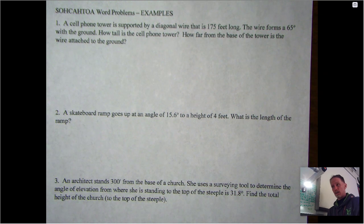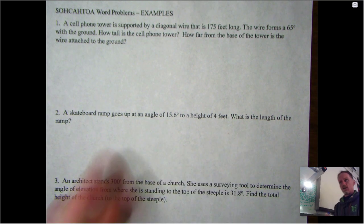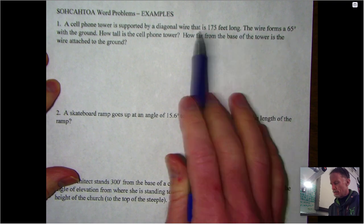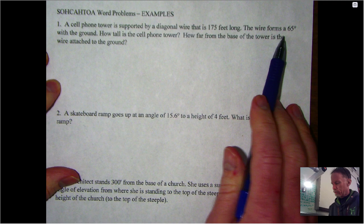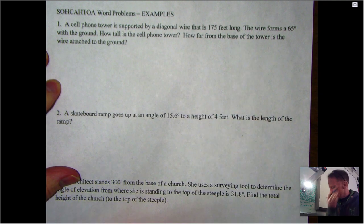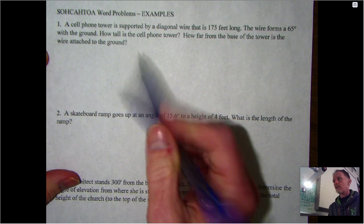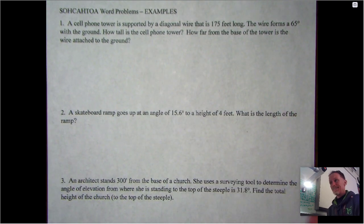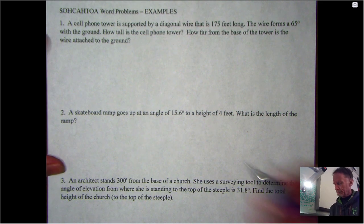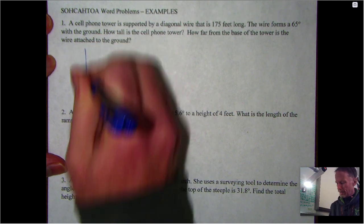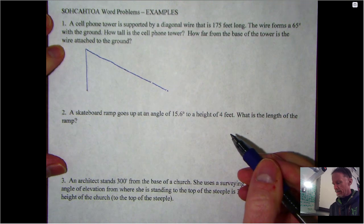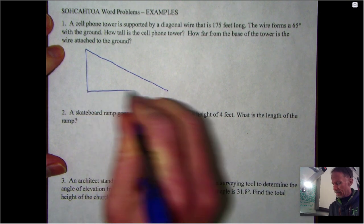So let's just jump right in. First question: a cell phone tower is supported by a diagonal wire that is 175 feet long. The wire forms a 65 degree angle with the ground. How tall is the cell phone tower? How far from the base of the tower is the wire attached to the ground? Now when you draw these things, it's gonna be a right triangle, so it does not have to be a work of art.